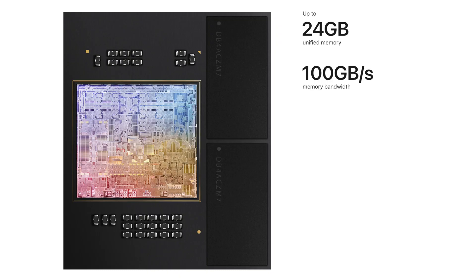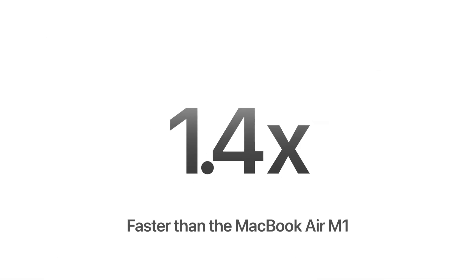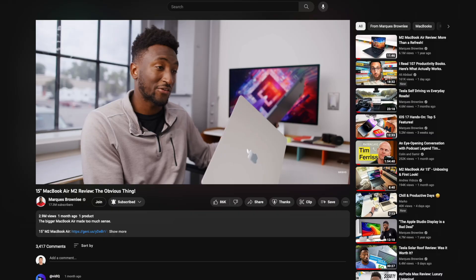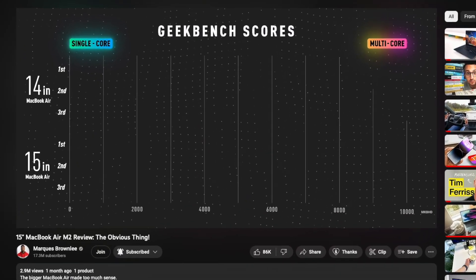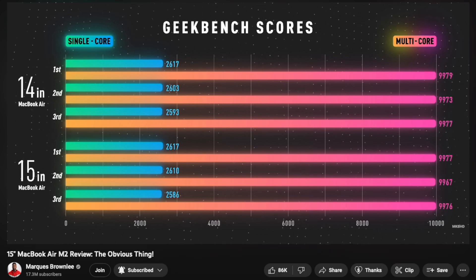So let's look into the performance of the new M2 chip. The MacBook Air is expandable up to 24 gigabytes of memory and the M2 gets an 8 core CPU, 10 core GPU, and a 16 core neural engine. Apple claims it's 1.4 times faster than the MacBook Air M1 and up to 12 times faster than the comparable Intel-based MacBook Air. In this video I'm not going to be looking into benchmark scores since it's more of a usability review — for that I'd recommend MKBHD's video review on the MacBook Air.